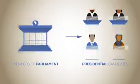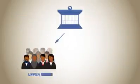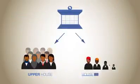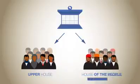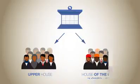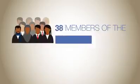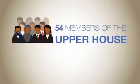The next federal parliament will consist of an upper house and a house of the people, also known as the lower house. Members of the state assemblies will elect 54 members of the upper house.